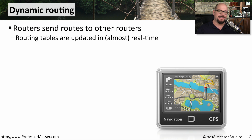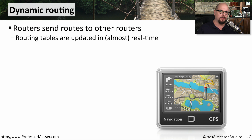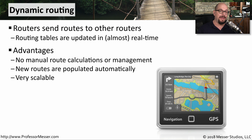Wouldn't it be nice if this entire process was handled automatically and you wouldn't have to add any routes at all? You can do that by using dynamic routing. This is when the routers send updates to each other, and if there are any changes to the network, it will update those routing tables in just a matter of seconds, so that all of the routers know exactly how to send traffic across the network. This means we don't have to perform any manual configurations of the routes. If any new routes suddenly appear, they will automatically be added to all of the other routers in the environment, and it will scale as we add more and more routers to our infrastructure.